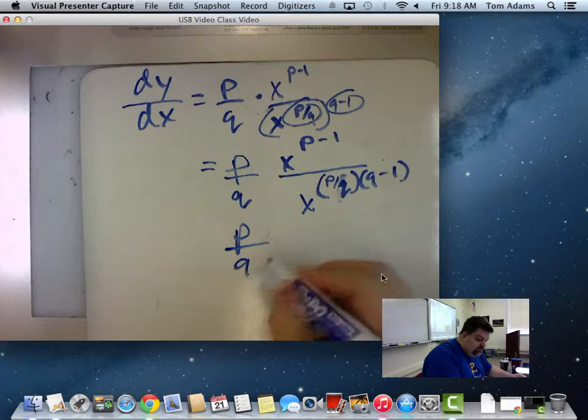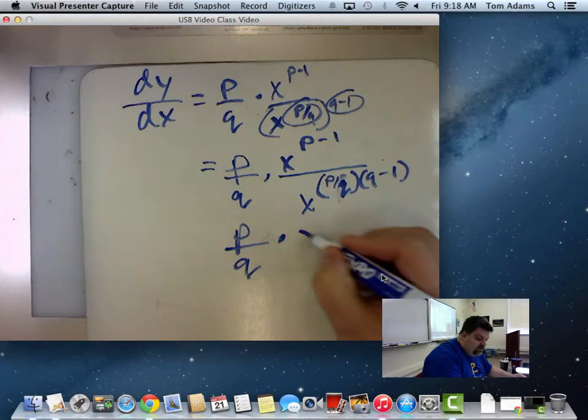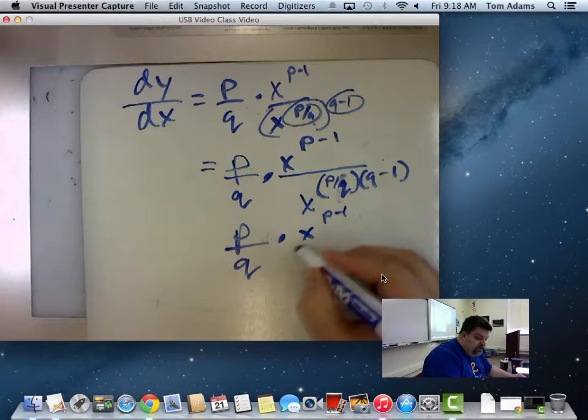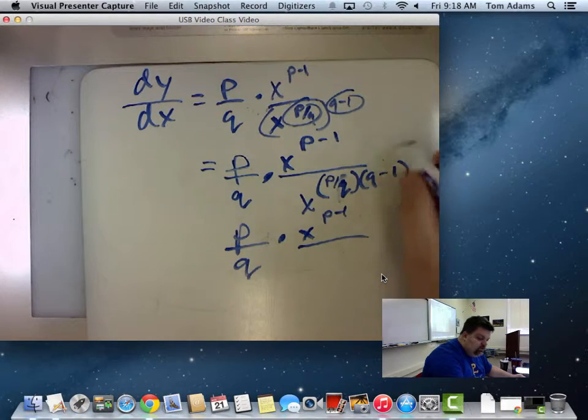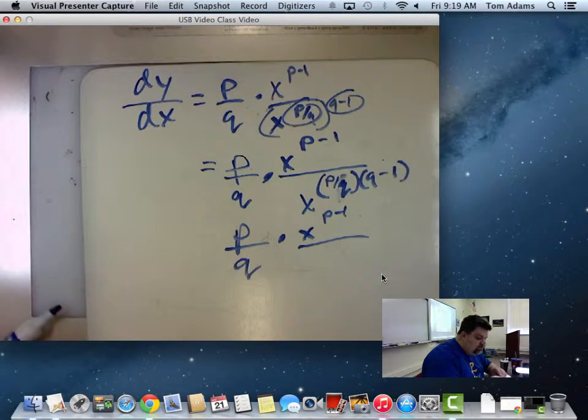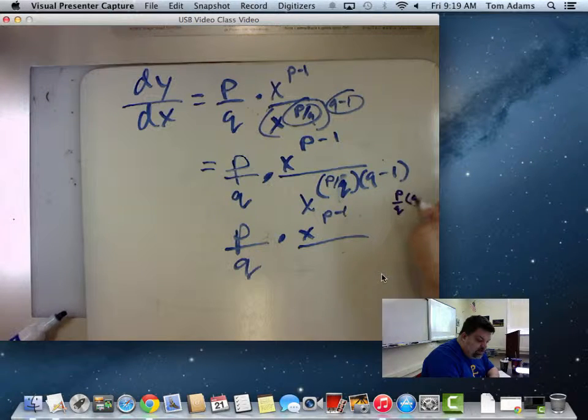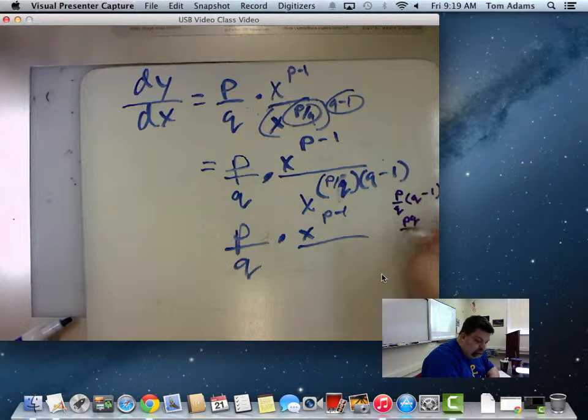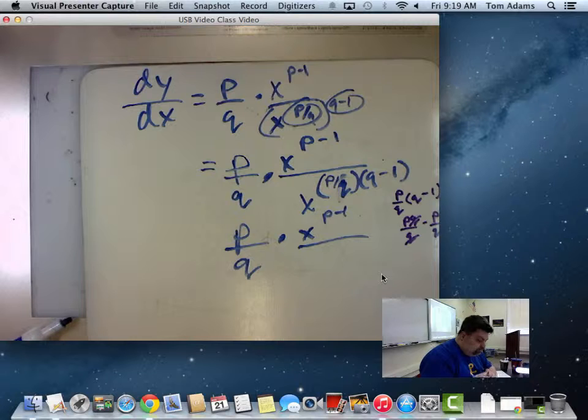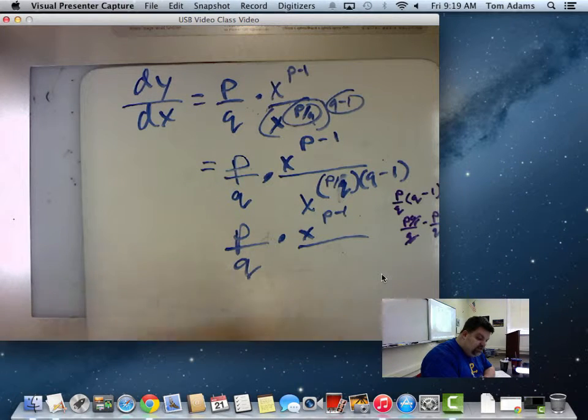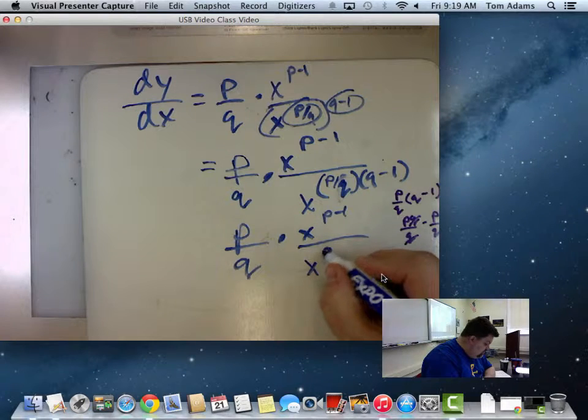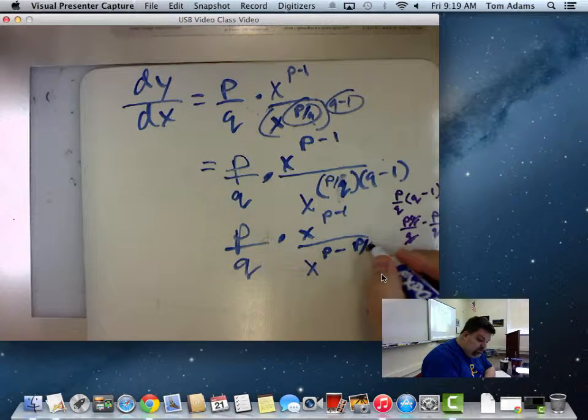Now, in the next line, your textbook skips this line. I'm not going to because I want you to kind of see what we're doing. P times Q, in other words, if I expand this out, and I'll write this over to the side, P over Q times the quantity Q minus 1 is going to be PQ over Q minus P over Q. But these Qs cancel, right?